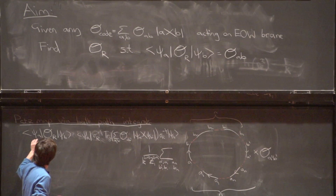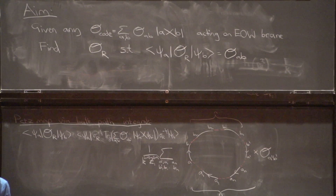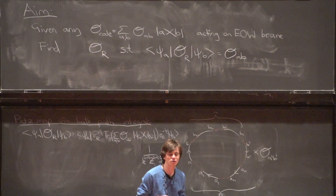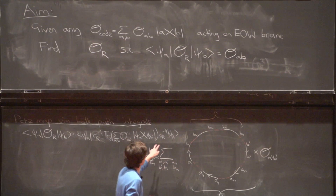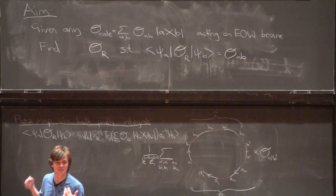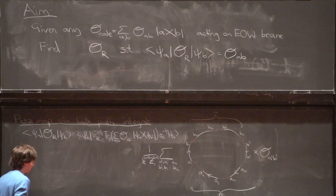We're going to evaluate matrix elements of O_R and show they're equal in the right limit to O_{AB}. The big problem with evaluating this is that it has σ_R^{-1/2}, and I don't know how to evaluate something to the minus-a-half power using a path integral.